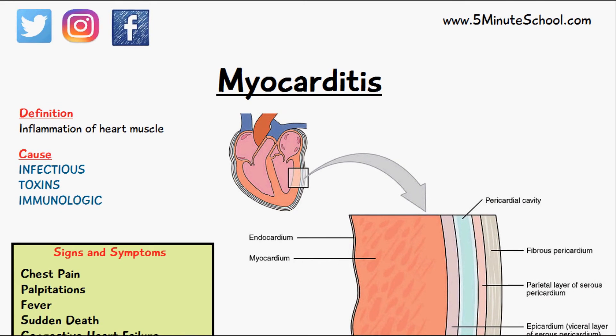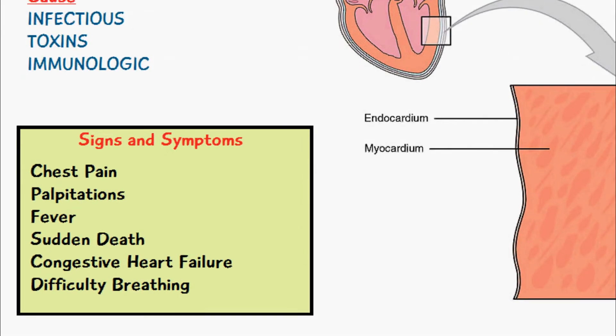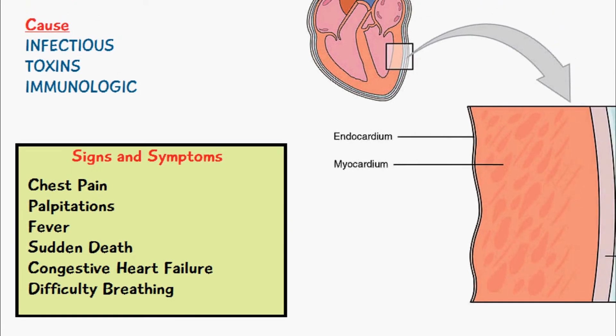Now let's look at the signs and symptoms of myocarditis. These include chest pain, palpitations, fever, and sudden death may occur as well. We also have congestive heart failure and difficulty breathing. Myocarditis can occur alongside pericarditis, so there is some overlap in the symptoms of the two conditions.